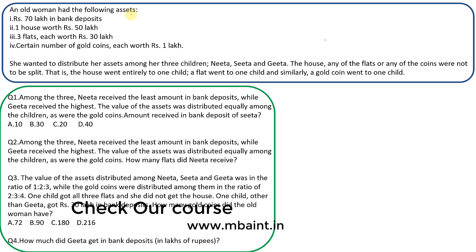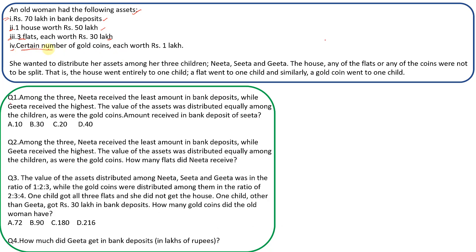An old woman had the following assets: the first asset is 70 lakhs in bank deposit; the second asset is one house worth 50 lakhs; the third asset is three flats each worth 30 lakhs; and the fourth asset is a certain number of gold coins — the number is not specified, but each gold coin is worth 1 lakh rupees.